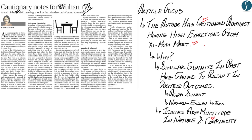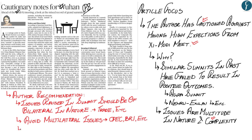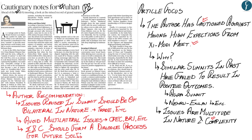The author's first recommendation is that issues raised in the summit should be bilateral in nature, such as trade and boundary issues. India and China should avoid multilateral issues such as CPEC and the Belt and Road Initiative. The author recommends that India and China form a dialogue process for future solutions, citing the composite dialogue process launched by I.K. Gujral in 1990, followed by Atal Bihari Vajpayee, Manmohan Singh, and most recently Prime Minister Narendra Modi.